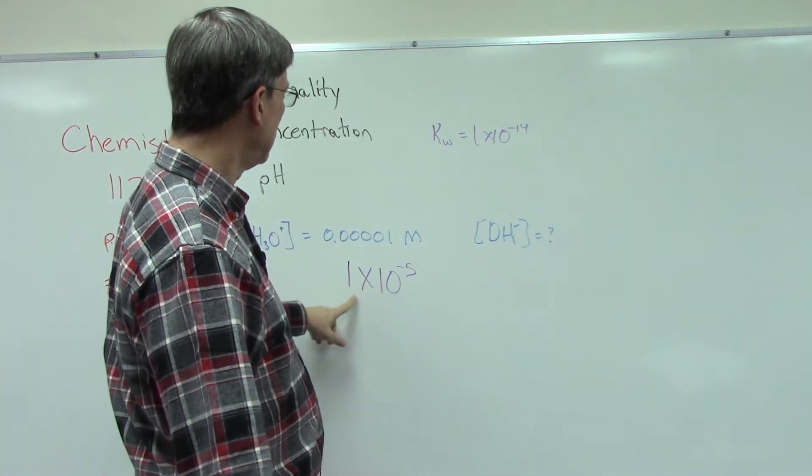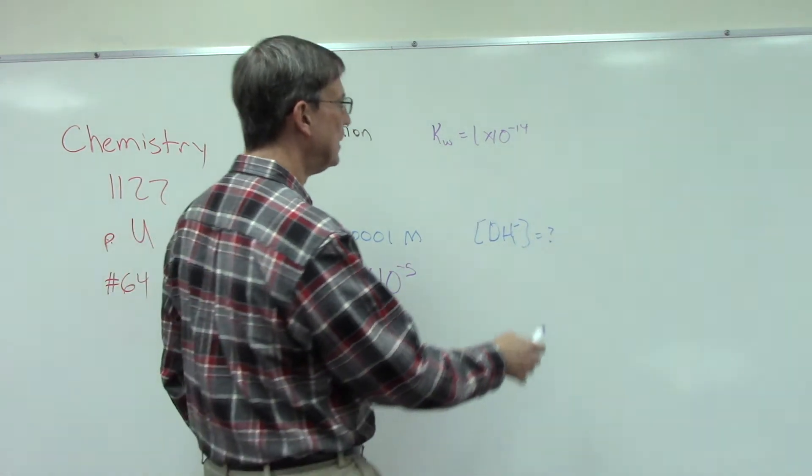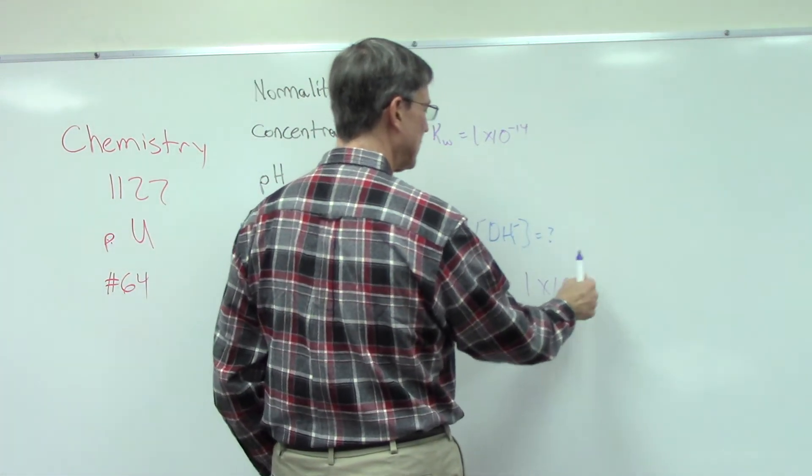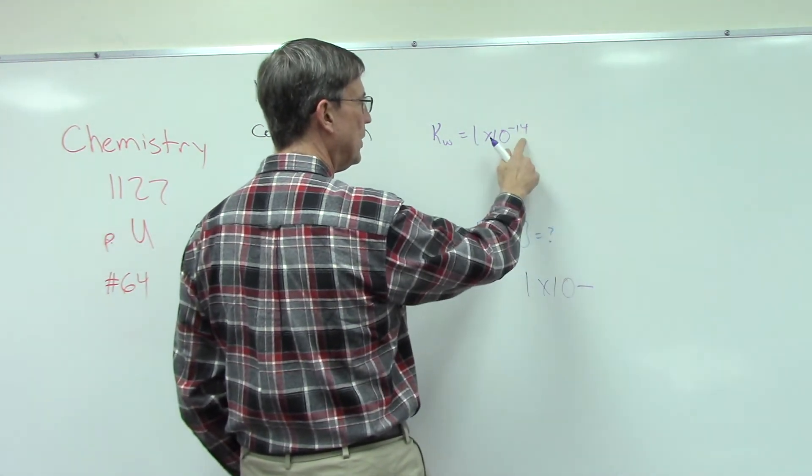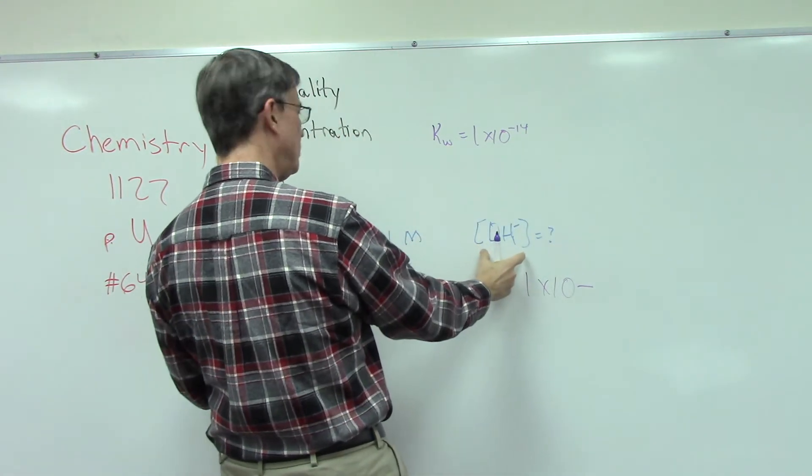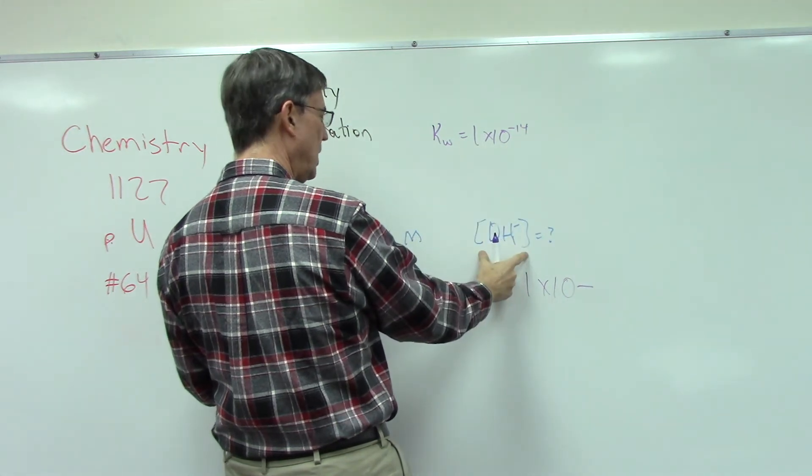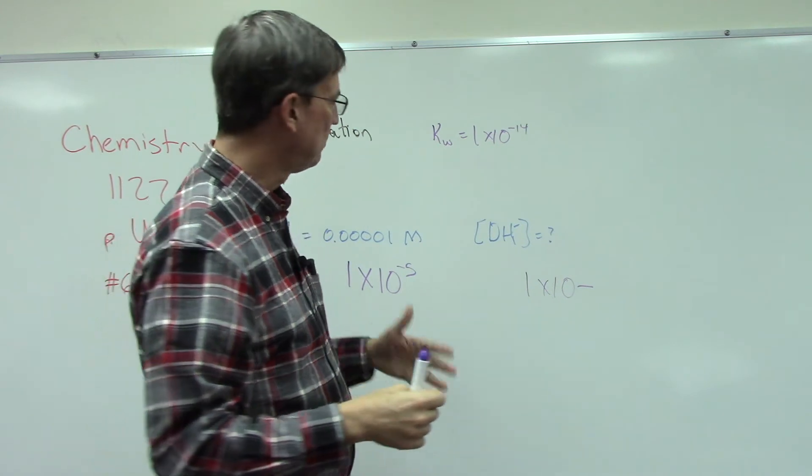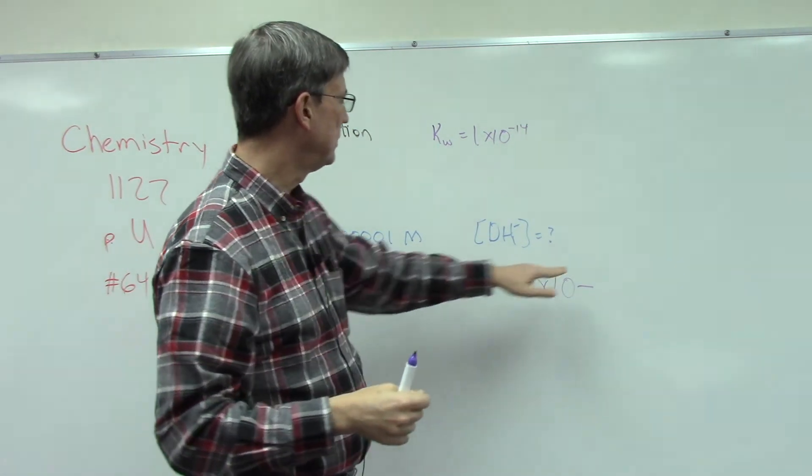So if the concentration of the acid is negative five, what we're asking is what would be this exponent so that when we add these two exponents together we would get this number, because we're multiplying these two concentrations together to get this concentration. And when you multiply exponential quantities, you add the exponents.